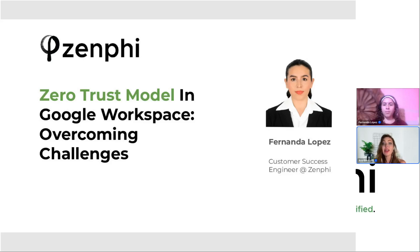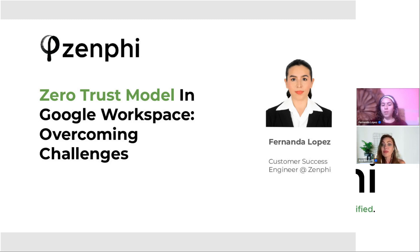I have a question about this workflow for granting least-privileged access. Will Zenfi be able to handle providing access to third-party tools as well, or are we talking just Google Workspace only? What about platforms like Jira, Trello, Asana, or ClickUp — things IT teams use consistently? Of course — Zenfi has pre-made actions for many different platforms. However, if you can't find the one you're looking for, you can easily connect to any platform that has an API using our HTTP action.